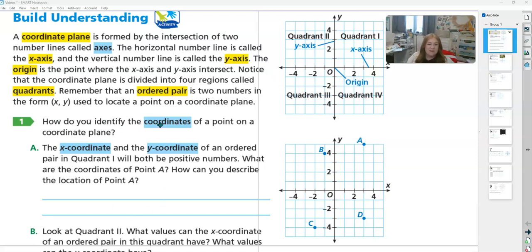So we're going to identify the coordinates of a point on this plane. So first, we have x and y. So remember, x goes over, then y goes up and down.